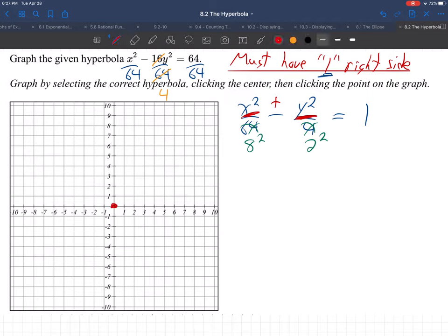And then, from the center, whatever's underneath x, that's always right-left, isn't it? Just like for an ellipse. So, you go right 8, left 8. And whatever's underneath y, that's always up-down. So, up 2, down 2.